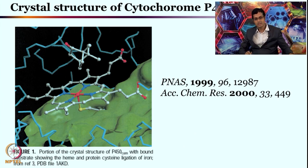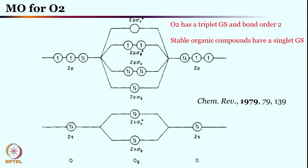Let us look at what we discussed in the last class. We discussed the oxygen molecular orbitals — the unpaired electrons are responsible for the triplet ground state of oxygen. Once oxygen is reduced by one electron, that electron goes into one of the two degenerate orbitals, giving the superoxo species. If it is doubly reduced, a peroxo species is formed — the one-electron reduced species is superoxo, and the two-electron reduced species is peroxo.